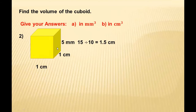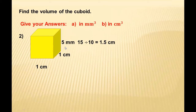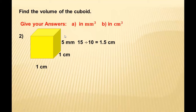Now, if a cuboid is given with different units — for example, centimeters and millimeters — you must convert them to the same unit first. In a cube, all measurements are equal, but in a cuboid they are different. Here we have two sides in centimeters and one in millimeters.